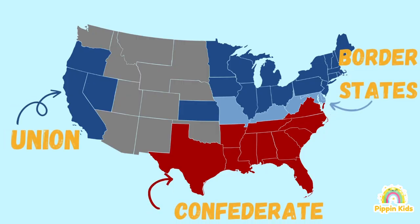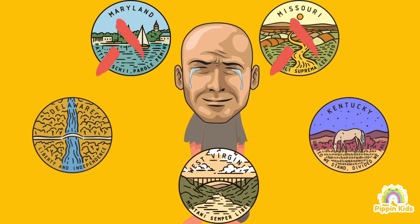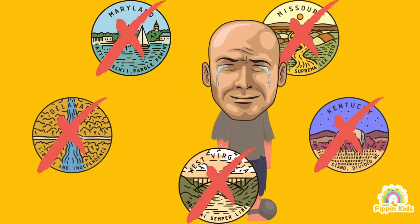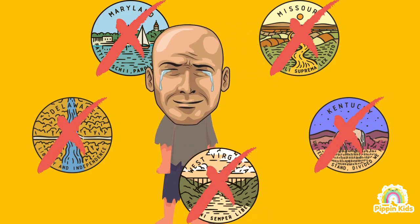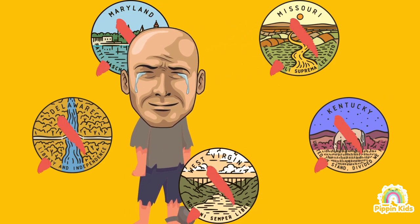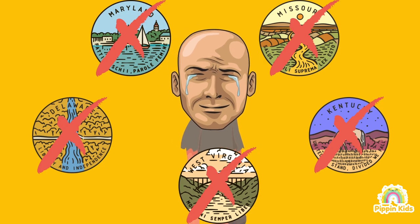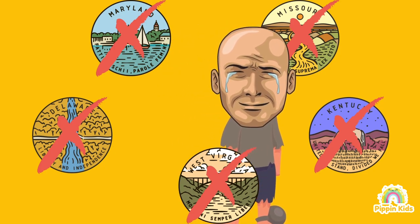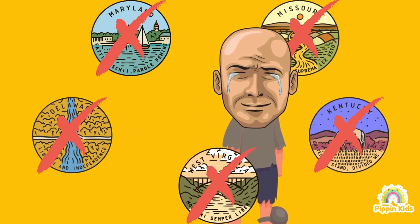It didn't free slaves in areas that were already under Union control, or the loyal border states of Maryland, Delaware, West Virginia, Kentucky, and Missouri.